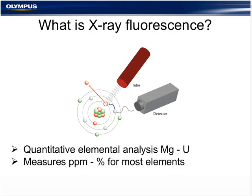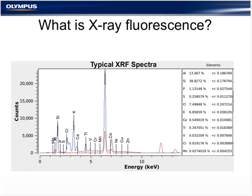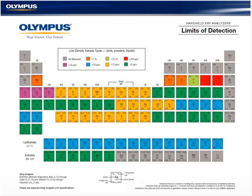On this next slide, we're showing the user interface — how the operator first sees the data output from the instrument. It consists of a graphic output and to the right-hand side also gives you elemental breakdown, concentration, and statistical analysis. Typical detection limits are shown on this slide. Detection limits will vary with sample matrix, but these are some general rules that you can apply.